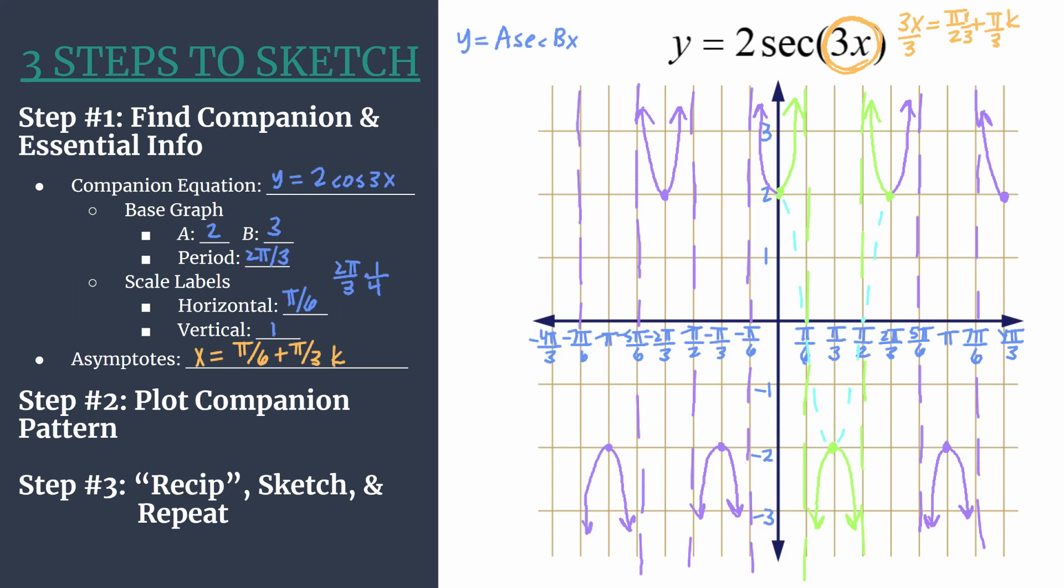We'll finish up here with the grid that we have. This is four cycles of y equals 2 secant 3x. I'll be sure to post some more examples so you can see this three steps to sketch method in action. Thanks for watching.